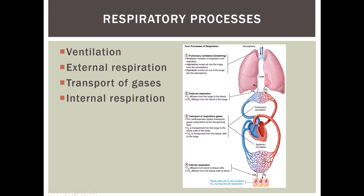We then have external respiration, which is the exchange of oxygen and carbon dioxide between the circulatory system and the lungs. We have the transport of the gases by the circulatory system, and then we also have internal respiration, which is the exchange of oxygen and carbon dioxide between the blood and all of our body tissues.